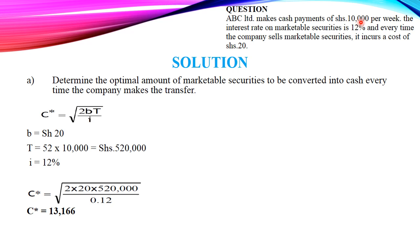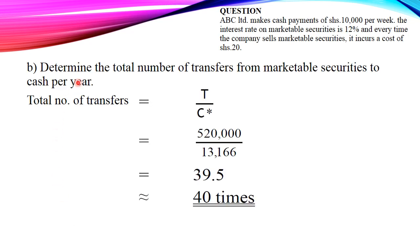To find the total annual cash requirements, we multiply 10,000 by 52 weeks (since one year has 52 weeks: 365 divided by 7), giving T = 520,000. The interest rate of 12% is our I (opportunity cost), expressed as 0.12. The fixed cost B is shillings 20. Substituting into the formula gives an optimal cash balance C of shillings 13,166.